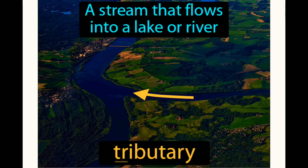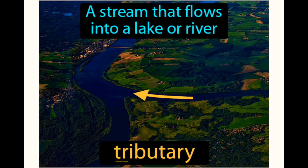A tributary is a stream that flows into a larger stream, lake, or river. Examples of tributaries are Yamuna and Yangtze. Yamuna is the tributary of River Ganga, and Yangtze is the tributary of Wangho.